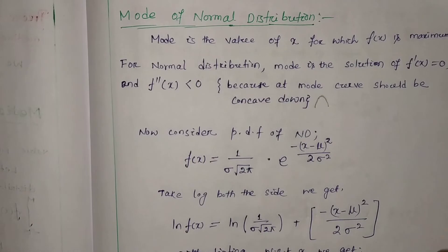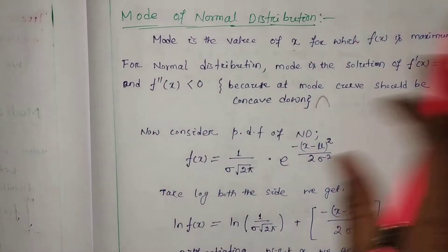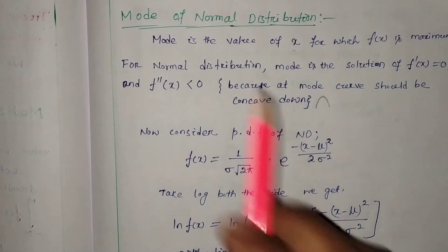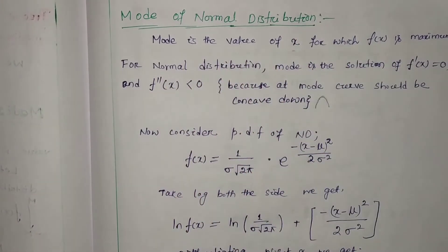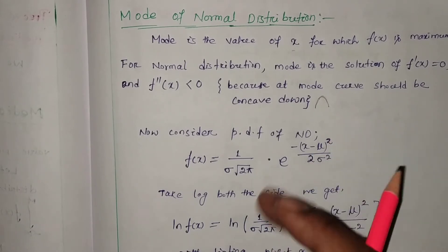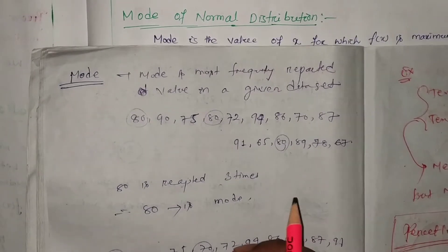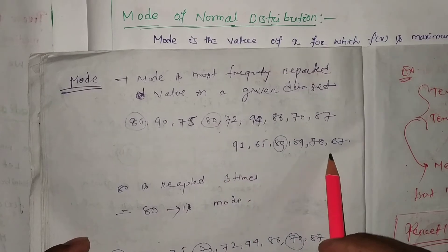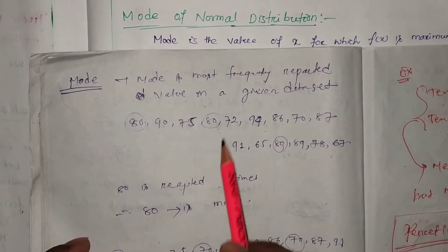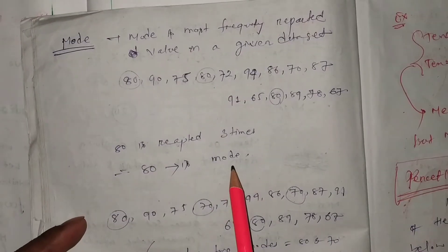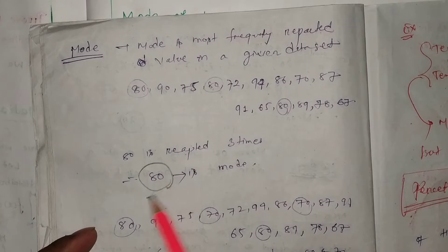Now we prove that the mode also coincides with the mean. We know that mode is the value of x for which f(x) is maximum. In a discrete distribution, the mode represents the value with maximum frequency. For example, if 80 appears three times and has the highest frequency compared to others, then the mode is 80.